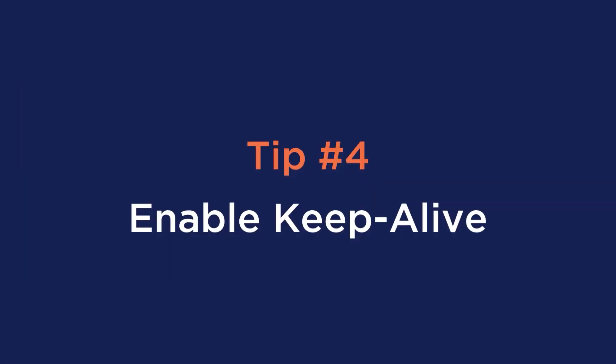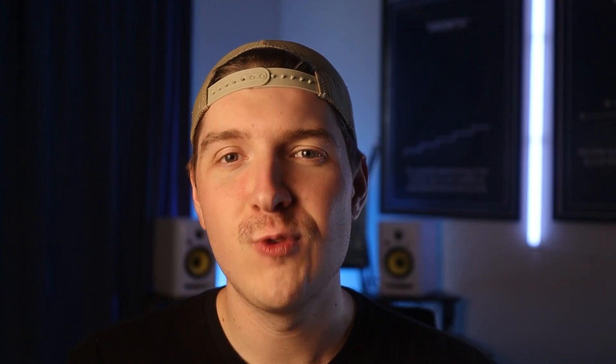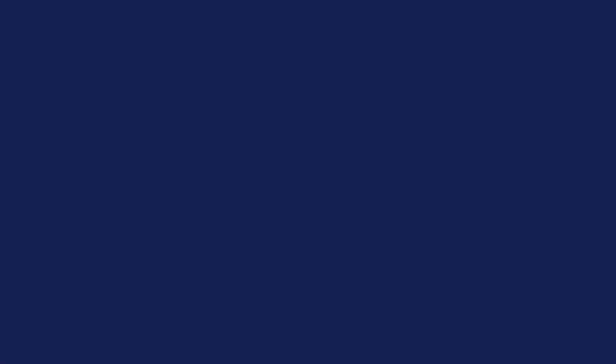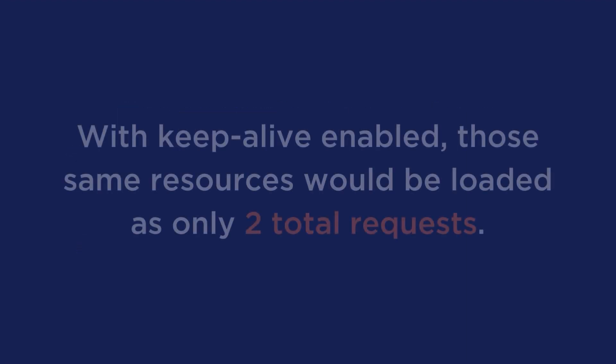Tip number four is to enable Keep Alive. This means keeping the connection between a server and browser consistently active to load more asset files at one time. Without it, resource files are all loaded as separate requests, even though multiple resources may be included in a single domain. For example, one asset from website1.com and three resources from website2.com result in four DNS requests. But with Keep Alive enabled, those same resources are loaded as only two total requests. All major browsers support Keep Alive, and it's enabled by default in most cases.